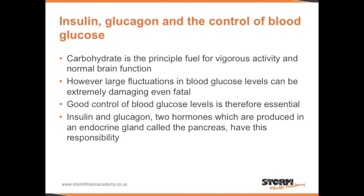Insulin, glucagon, and the control of blood glucose. Carbohydrate is the principal fuel for vigorous activity and normal brain function. However, large fluctuations in blood glucose levels can be extremely damaging, even fatal. Good control of blood glucose levels is therefore essential. Insulin and glucagon are two hormones produced in the endocrine gland called the pancreas, and they have this responsibility.